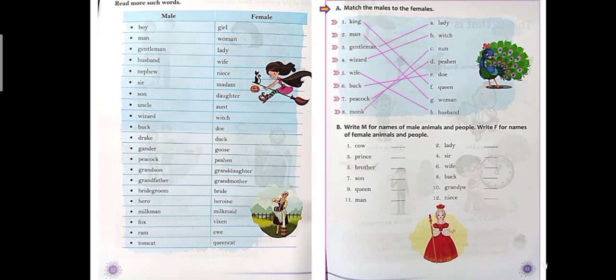Question B is your homework. Write M for names of male animals and people. Write F for names of female animals and people.